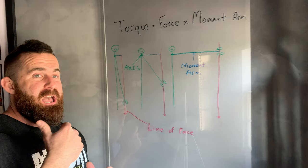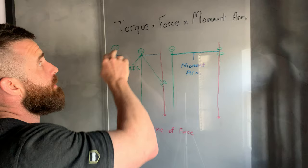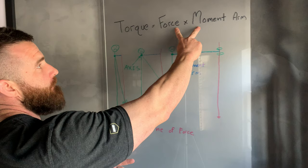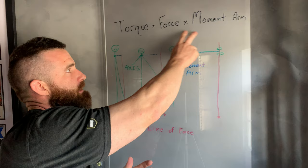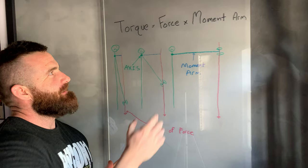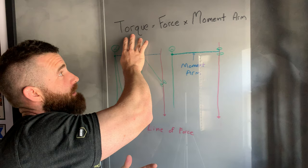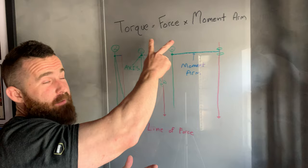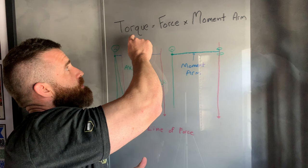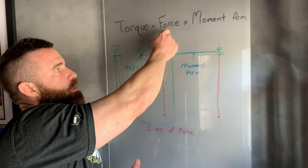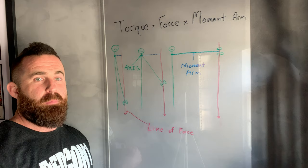When we're trying to figure out how hard an exercise is—how much force the muscle has to produce—we need to know both pieces of the equation. So which is more important: the force or the moment arm? They are of equal importance. It's like trying to solve an equation when you only know one value—you literally can't solve it. You need both pieces. If you only understand weight, you can't understand the full picture of what muscles have to do through a range of motion.